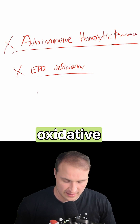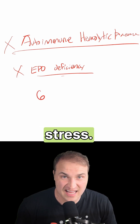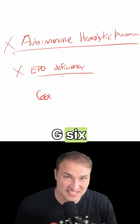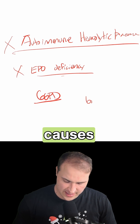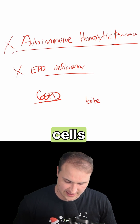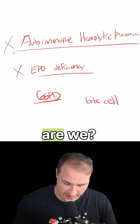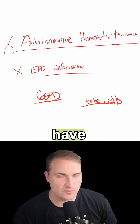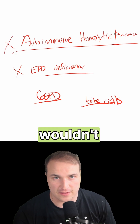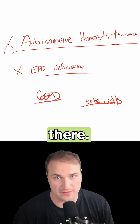They might try to get you with oxidative stress — they might throw G6PD deficiency at you. But that causes bite cells, and we're not going to fall for that. Also, you wouldn't have renal failure or thrombocytopenia there.